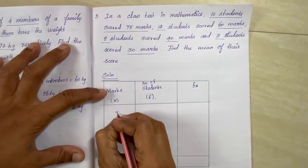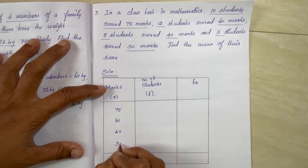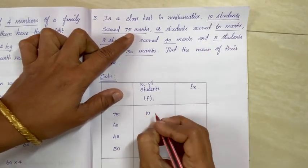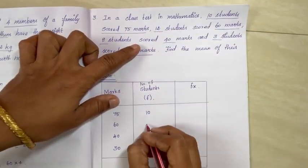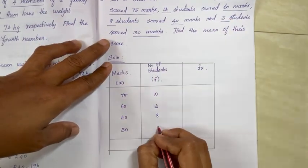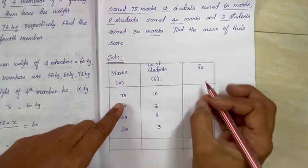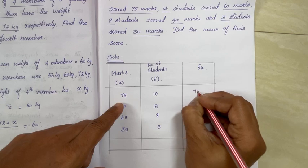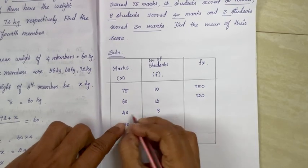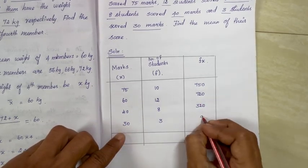Filling in the table: marks 75, 60, 40, and 30. Students: 75 marks — 10 students; 60 marks — 12 students; 40 marks — 8 students; 30 marks — 3 students. Now computing fx: 10 × 75 = 750; 12 × 60 = 720; 8 × 40 = 320; 3 × 30 = 90.